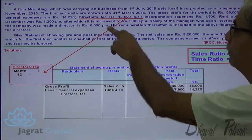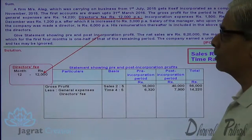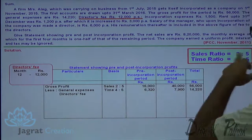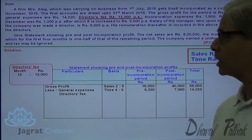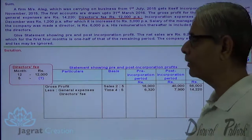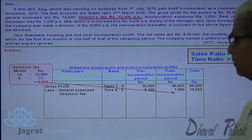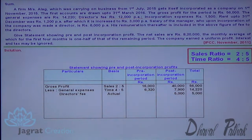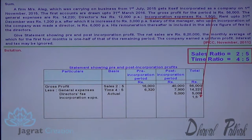Director fees are 12,000 per annum, and there are 5 months in the post incorporation period. So director fees are allocated only to the post incorporation period for 5 months. Incorporation expenses of 1,500 are also charged entirely to the post incorporation period.